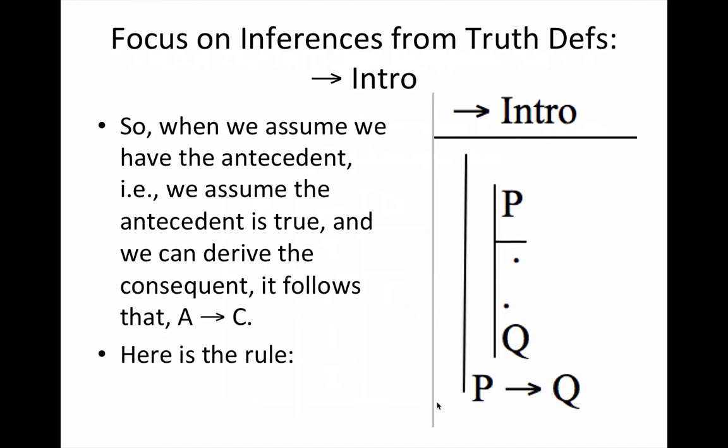Now, let's look at the left side of the slide here. I've used the example A arrow C. It really doesn't matter what the antecedent is, what the consequent is. You assume the antecedent, you derive the consequent, you get out of that sub-proof.